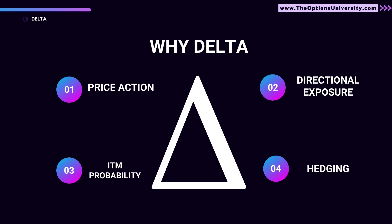The fourth use of delta is hedging. Options are a good way to hedge your stock positions, and by using delta you can decide your hedging percentage — whether you want to do 100% hedging or, say, 60% hedging. That parameter can be decided using delta. We're going to discuss all these points one by one in more detail with quick examples.